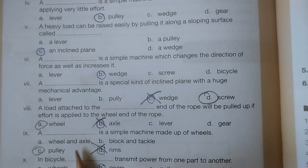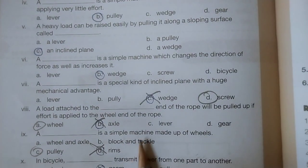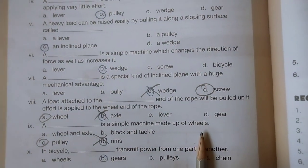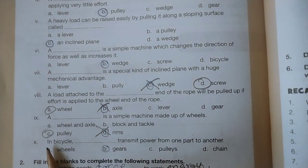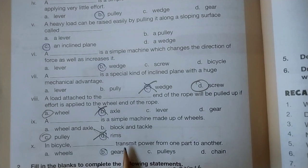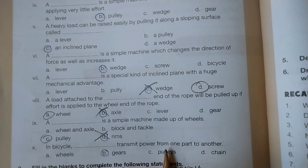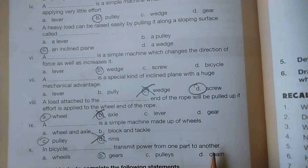Question 9: A pulley is a simple machine made up of wheels. In bicycle, gears transmit power from one part to another.